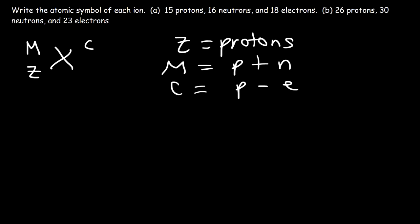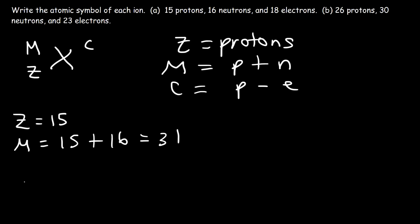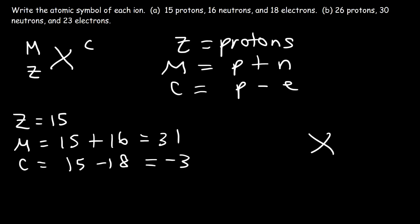For part A, the number of protons is 15, so Z = 15. The number of neutrons is 16, so the mass number is 15 + 16 = 31. The charge is protons minus electrons: 15 minus 18 gives a net charge of −3. Because there are more electrons than protons, we have a negatively charged anion, with atomic number 15, mass number 31, and charge of −3.